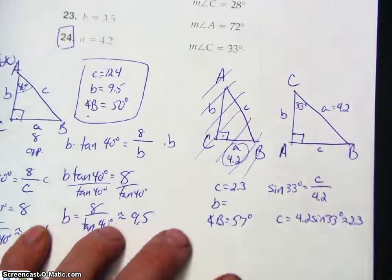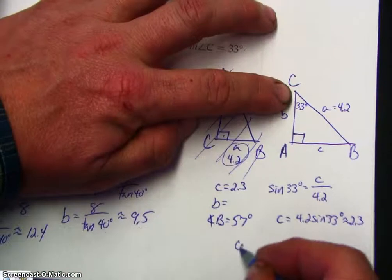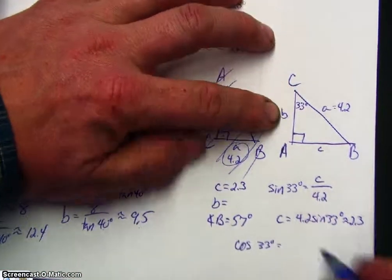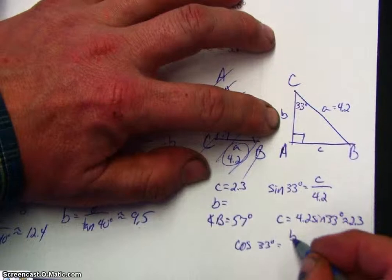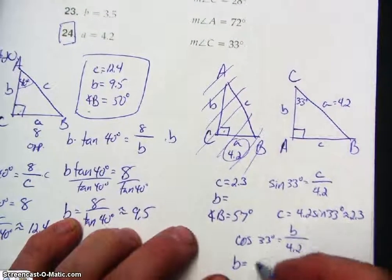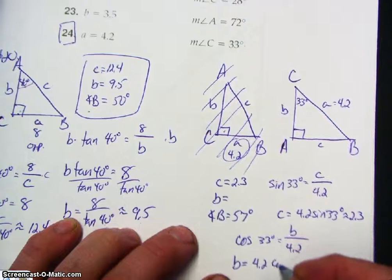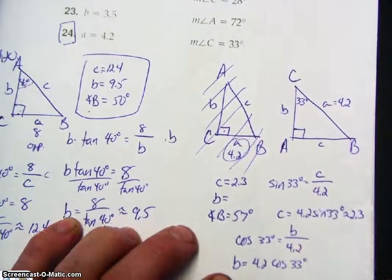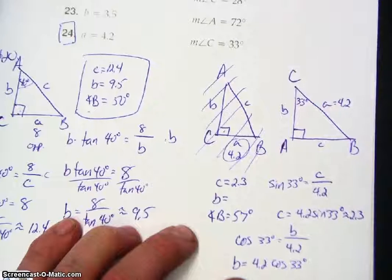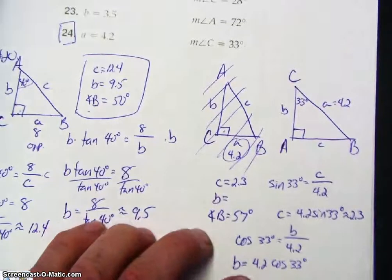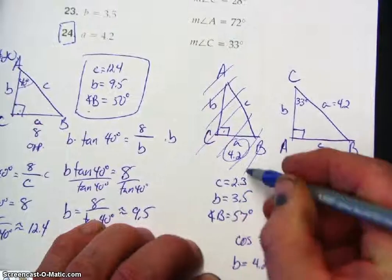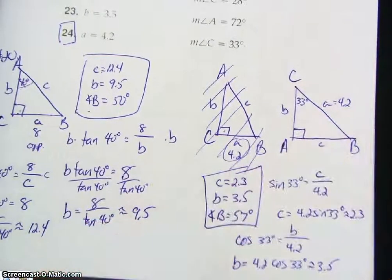And then side B, so I'm going to use cosine of 33 degrees is equal to adjacent over hypotenuse. So B is equal to 4.2 cosine of 33 degrees. Use calculator, and you get 3.5. And there's your measurements.